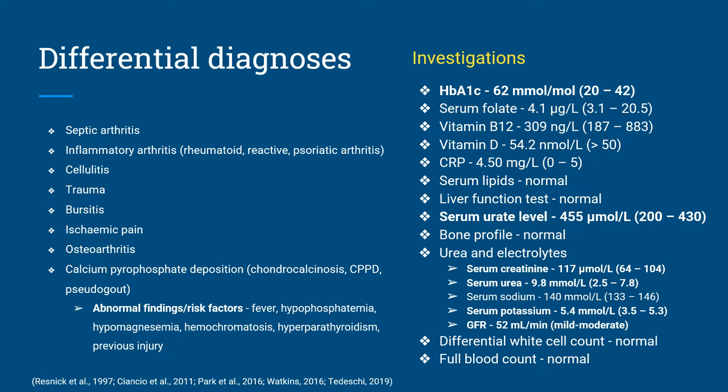Lastly, pseudo-gout or calcium pyrophosphate deposition (CPPD) is a crystal-induced arthritis that mimics gout. This differential was excluded on the basis that blood tests revealed hyperuricemia, which is a feature of gout and not pseudo-gout. Abnormal findings and risk factors for CPPD are outlined on this slide, neither of which were present in David's case. Pseudo-gout tends to affect medium and large joints such as the knee, wrist, ankle and shoulder, and very rarely affects the big toe. There is only one documented case in the literature of pseudo-gout at this location. Definitive diagnosis would require evidence of calcium pyrophosphate crystals under polarized light microscopy and chondrocalcinosis on X-ray diffraction or ultrasound, which is impractical and would delay treatment. However, this would be considered if David were unresponsive to treatment.